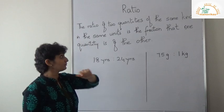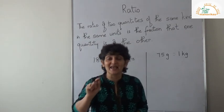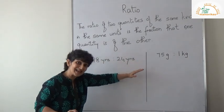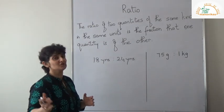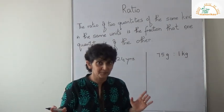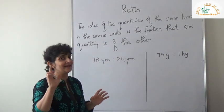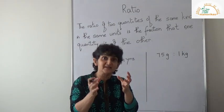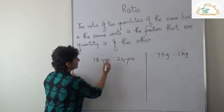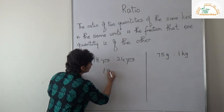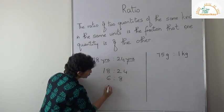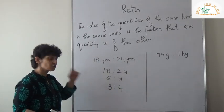Now let's go to some other examples. The ratio of two quantities must be of the same kind. Here I have years and years, so they are the same kind. But here I have another example: 75 grams to 1 kg — the units are different. When the units are different, you cannot reduce directly; you must bring them to the same unit first. Since both are years here, that's fine. So 80 is to 24 — using tables: 3 eights are 24, 3 eights are 24 — my ratio is 3 is to 4.